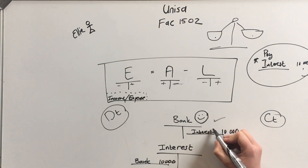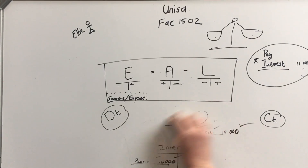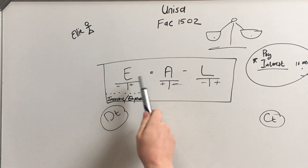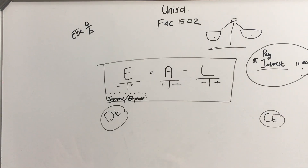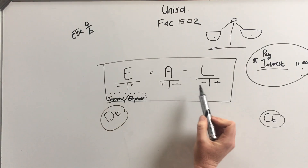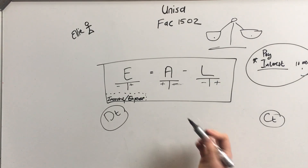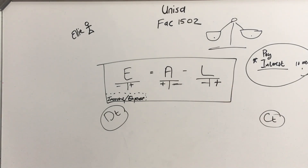You're going to get marks for the right account name, for the right entry, for the right amounts — loads of marks. This is what accounting is. When you get to the test, write down equity equals assets minus liabilities, put them on T-accounts, and remember: start with minus, then minus plus, plus minus, minus plus. Don't mess up the minuses and pluses or you'll be seeing me again next year!